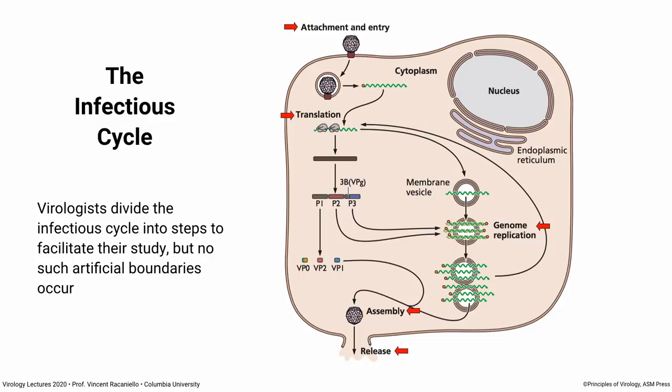Viral proteins are made, and those proteins have a number of functions. They first have to make more viral genomes — what we call genome replication — and of course they have to make new virus particles. That leads to assembly: you take viral proteins, viral genomes, put them together, and then you have release of the virus particles from cells. That constitutes the entire reproduction or infectious cycle.